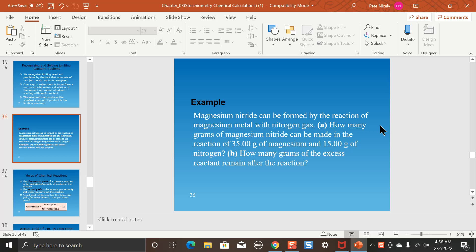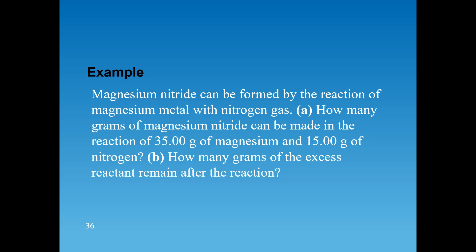So now we're going to look at this example. It's a two-part question. They're talking about the reaction to form magnesium nitride. And to form that product, you're going to react magnesium metal with nitrogen gas. The first part is asking how many grams of magnesium nitride can be made in the reaction of 35.00 grams of magnesium and 15.00 grams of nitrogen.